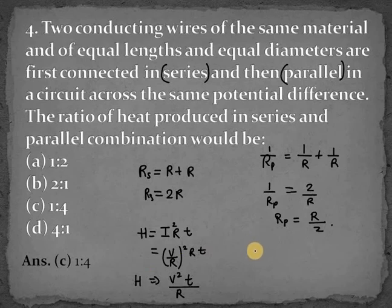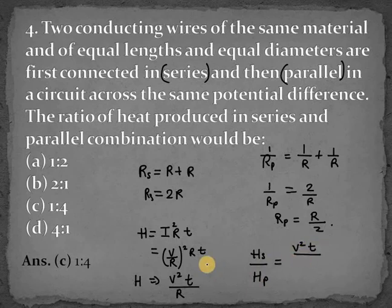Now we write heat for the series configuration. Hs over Hp. So Hs will be V squared T over Rs. Rs will be 2R, so this is for series.